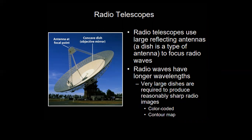Radio telescopes use large reflecting antennas — a dish is a type of antenna. The dish is shaped to direct radio waves to a focal point where a chip or detector collects the data. Radio waves have longer wavelengths, so very large dishes are required to produce reasonably sharp radio images — we need a big dish, not a small one.